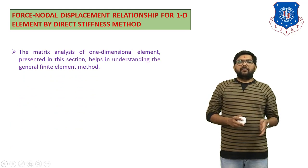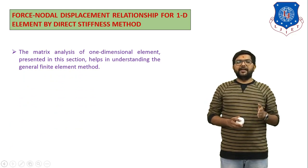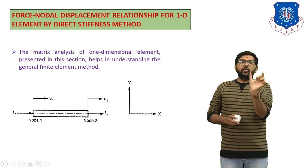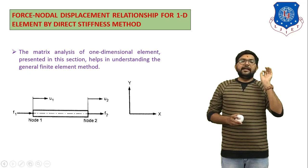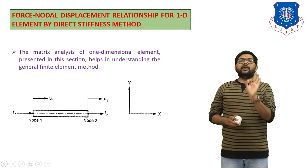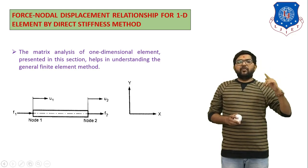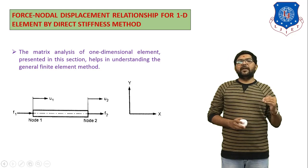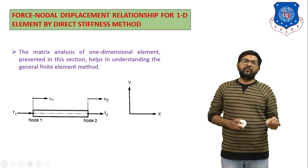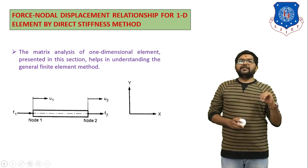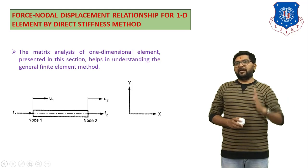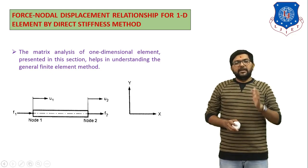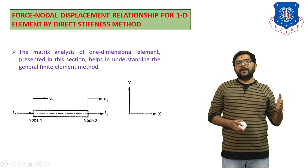The matrix analysis of a one-dimensional element presented here helps in understanding the general finite element method. We select one element with two nodes: node 1 and node 2. The displacement at node 1 is u1 and at node 2 is u2. The applied force at node 1 is f1 and at node 2 is f2. These are the respective nodal forces and displacements.